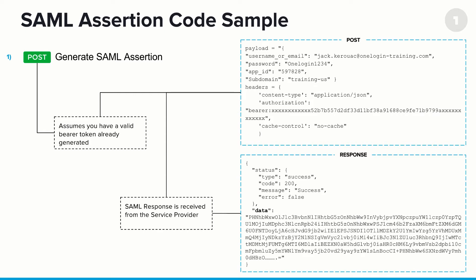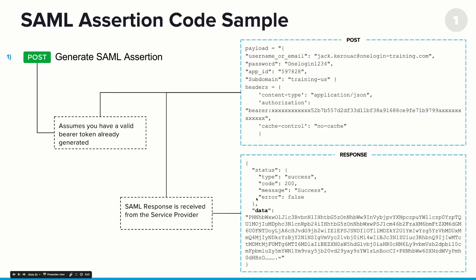The SAML assertion endpoint takes a similar payload to the previous call — the username or email, their password, and the app ID. If successful, you'll get a return code as well as an actual SAML response. These responses are especially useful if you're trying to set up a command-line interface to AWS.